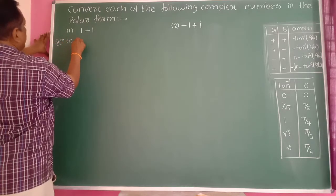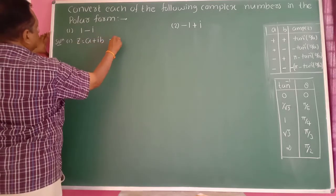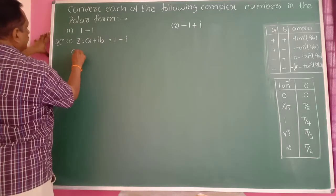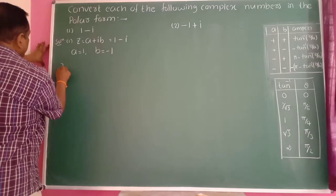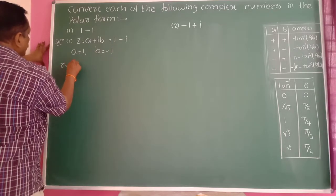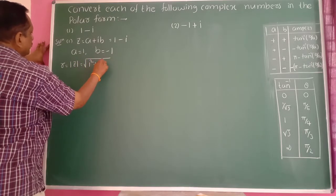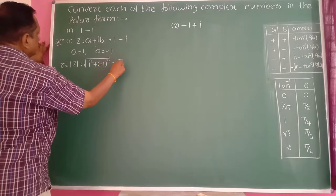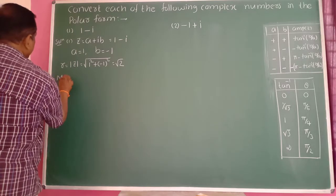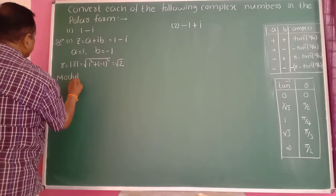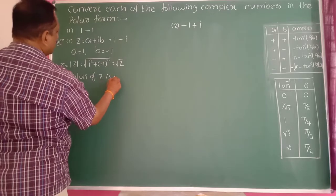Next example: z equals a plus ib equals 1 minus i. Hence a is equal to 1 and b is equal to minus 1. Finding the modulus: r equals modulus of z equals root of 1² plus (minus 1)², which gives root of 2. Therefore the modulus of z is root 2.